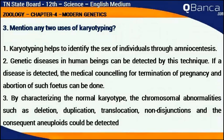Mention any two uses of karyotyping. Karyotyping helps to identify the sex of individuals through amniocentesis. Genetic diseases in human beings can be detected by this technique. If a disease is detected, medical counseling for termination of pregnancy and abortion of such fetuses can be done.